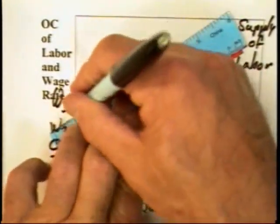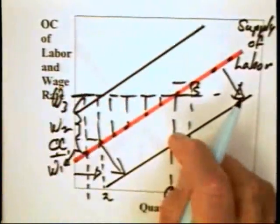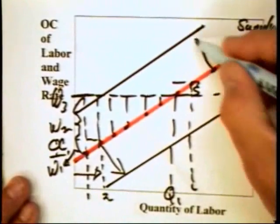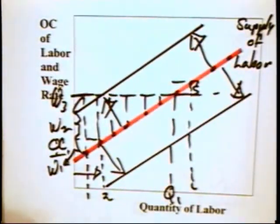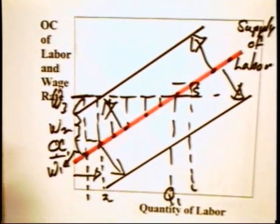And here we have a decrease in supply of labor, and it can decrease because the opportunity cost of workers declines.